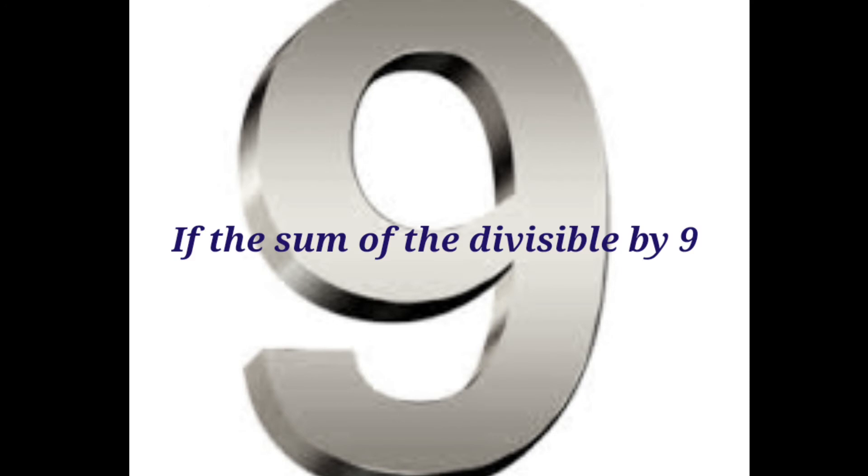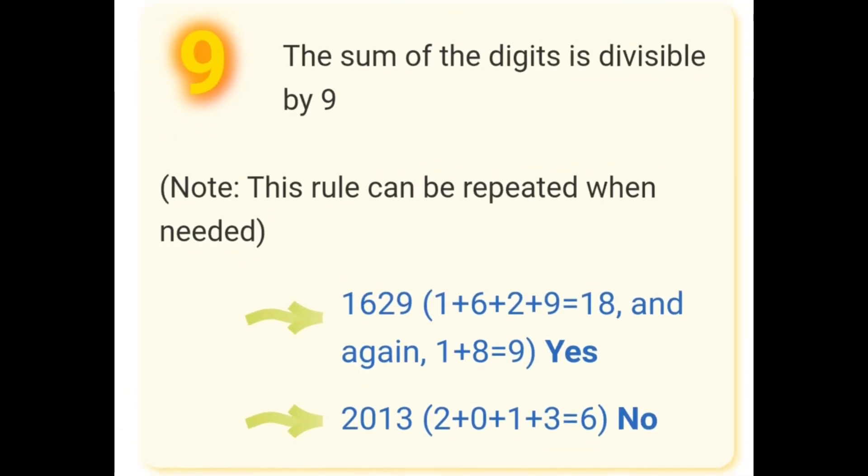Example 1629. When we add all the digits, i.e. 1 plus 6 plus 2 plus 9, we get 18. 18 divided by 9, quotient is 2. Since 18 is divisible by 9, therefore 1629 is also divisible by 9.